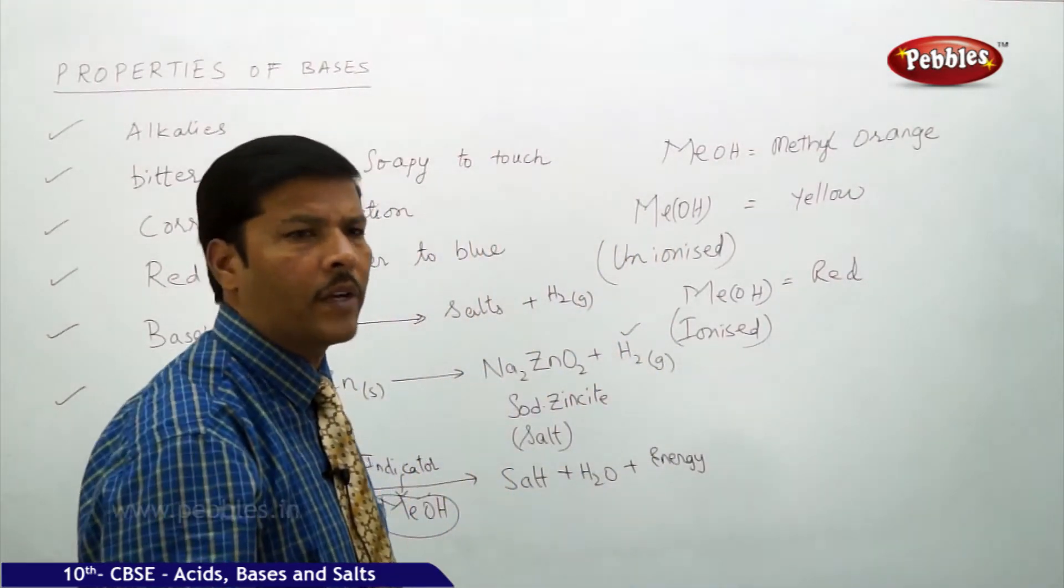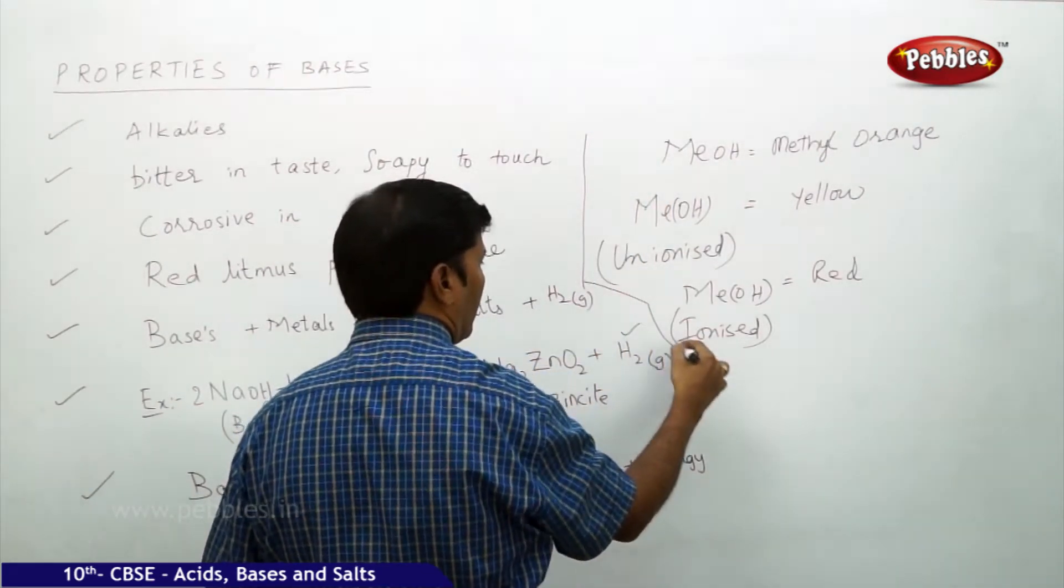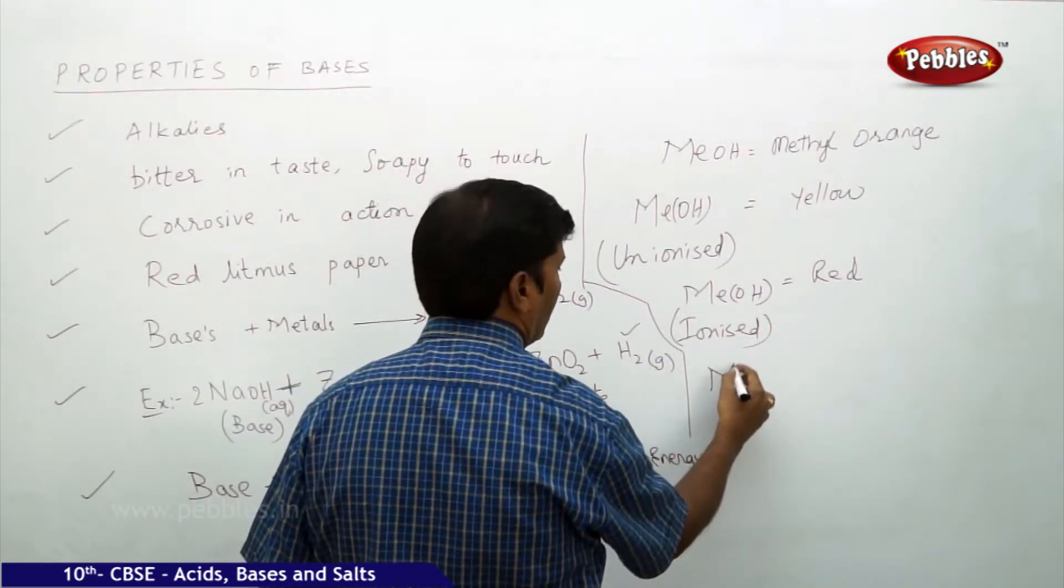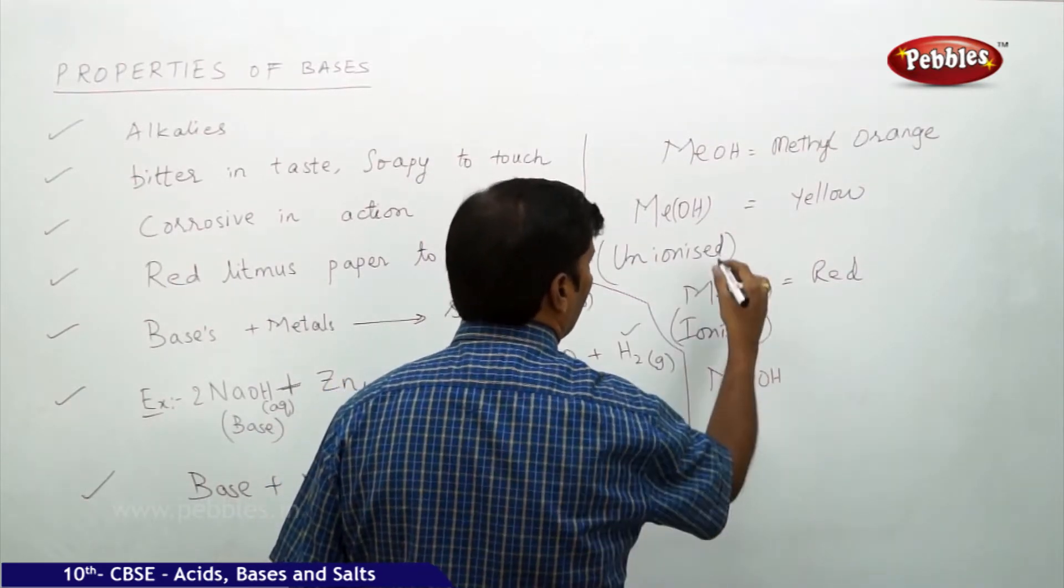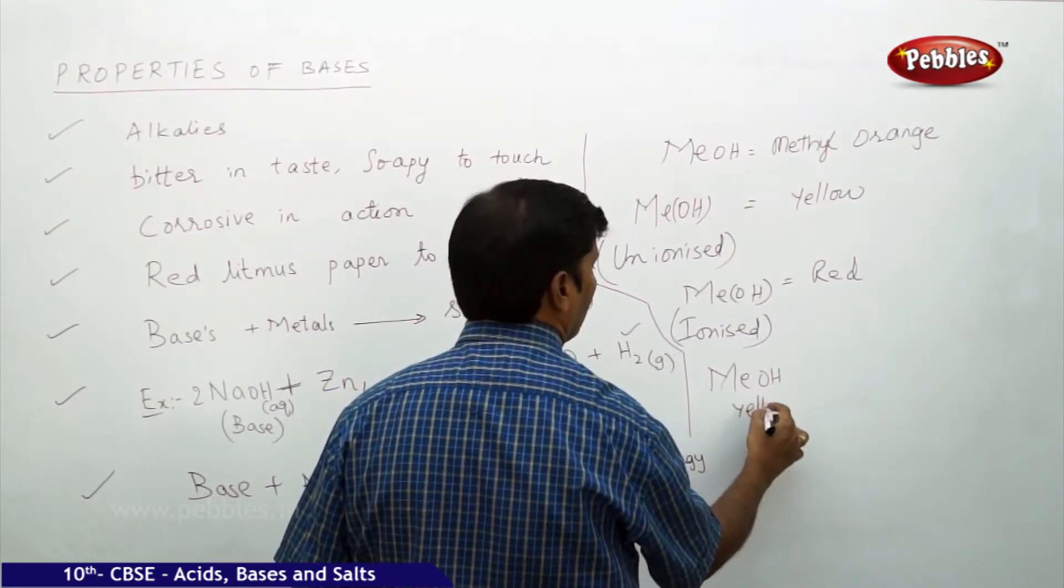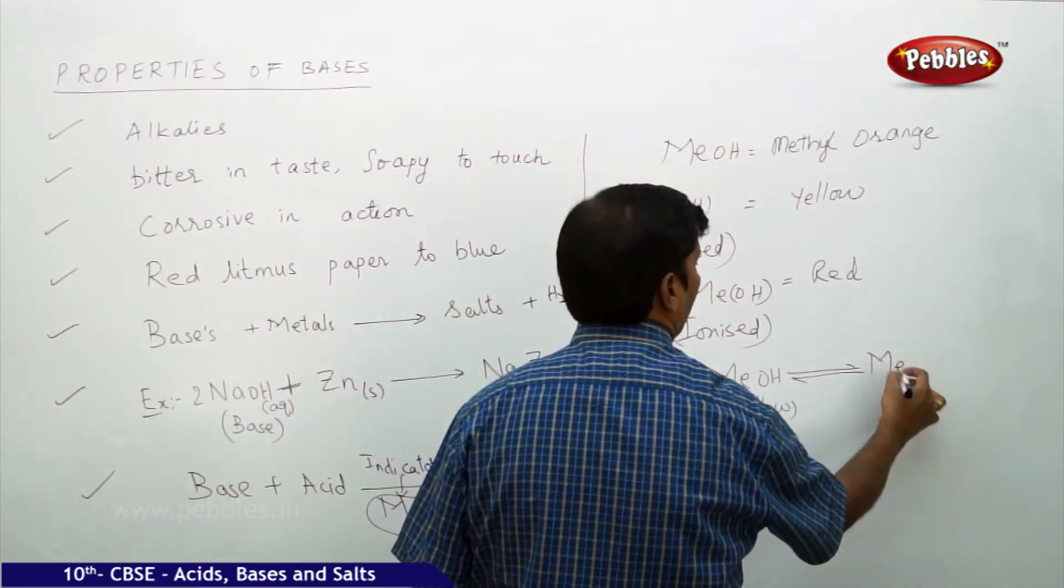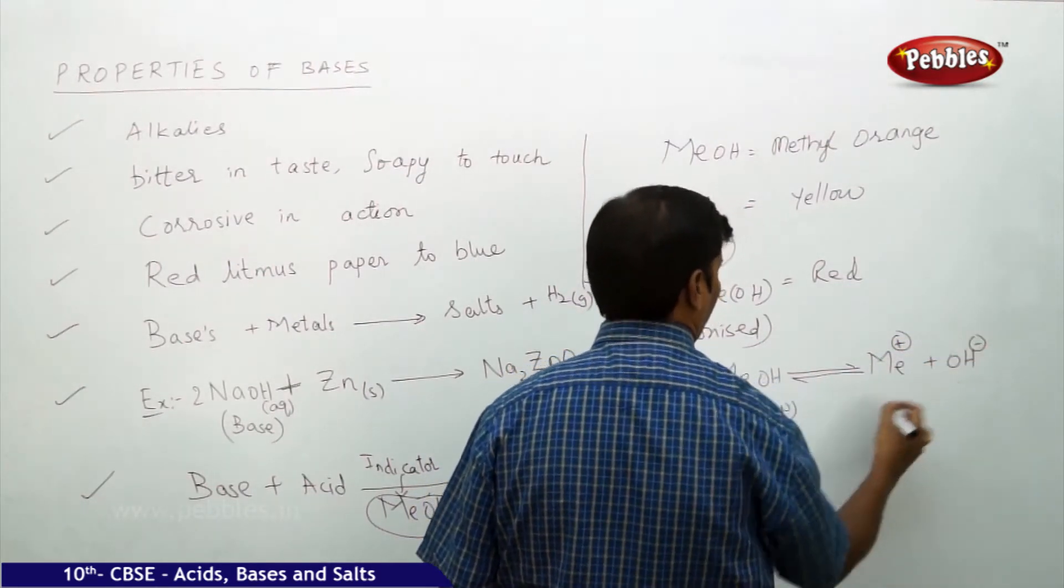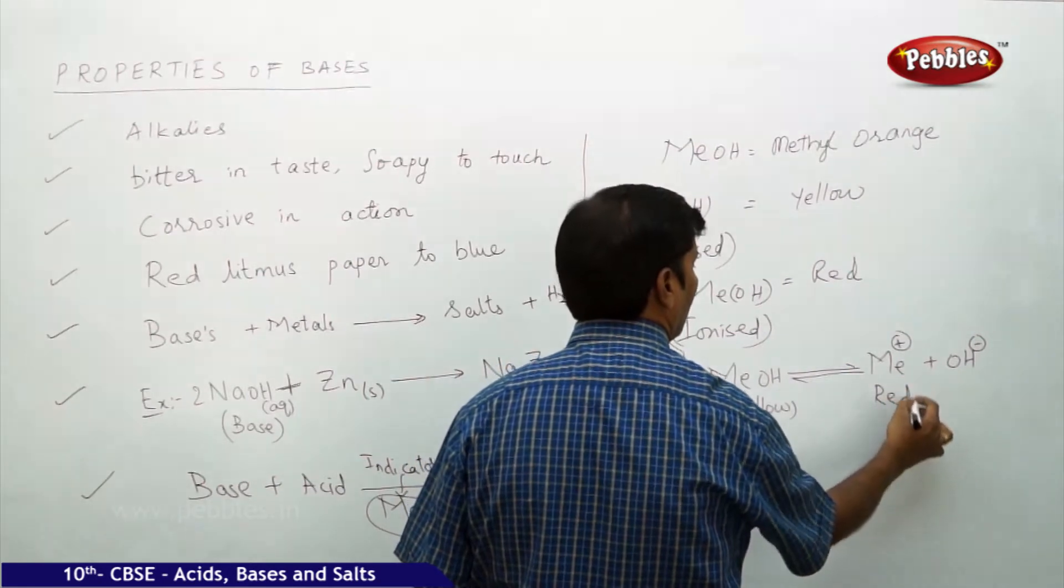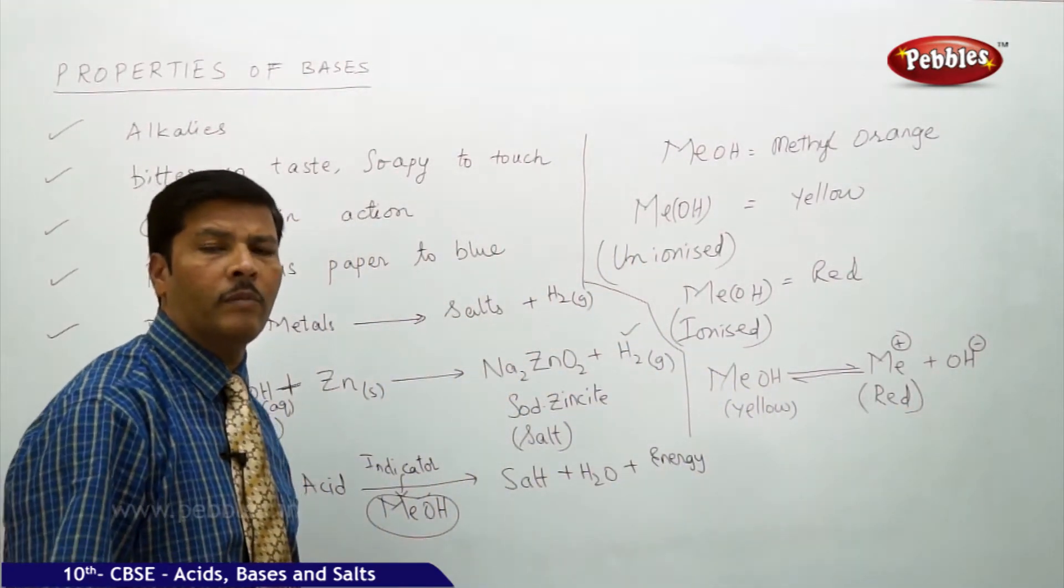Suppose if I show you the reaction for methyl orange, that is MeOH, methyl orange in the unionized state is yellow. It dissociates to form Me+ plus OH- and it changes to red color. This is the principle of methyl orange.